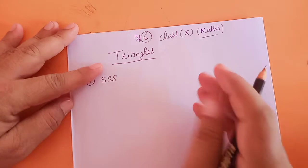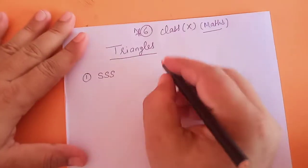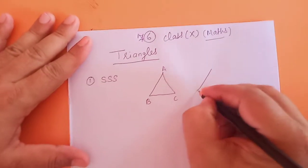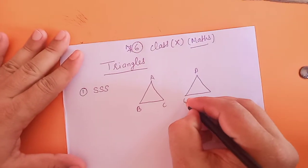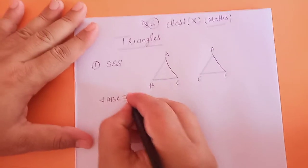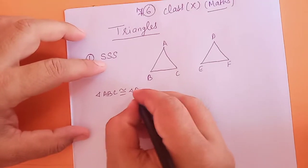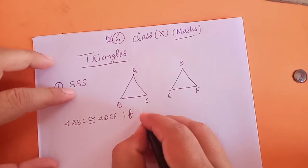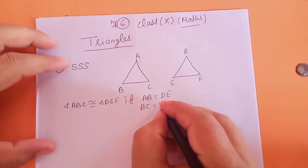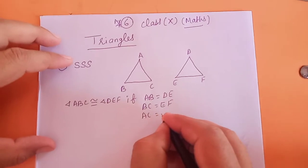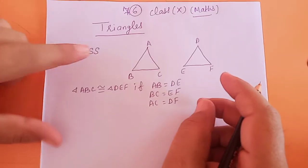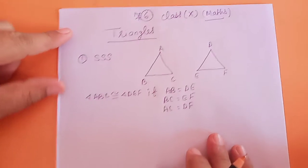You can say side, side, side. Its meaning is this: if all 3 sides of one triangle are equal to all 3 sides of another triangle. This is triangle ABC and another triangle is DEF. So triangle ABC is congruent to triangle DEF if AB equal to DE, BC equal to EF, and AC equal to DF.